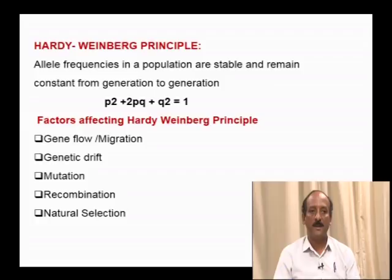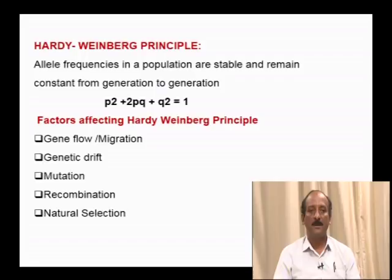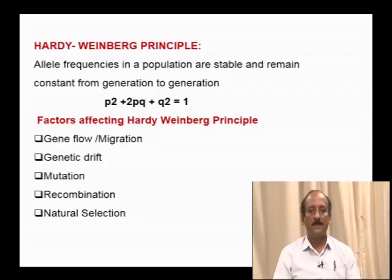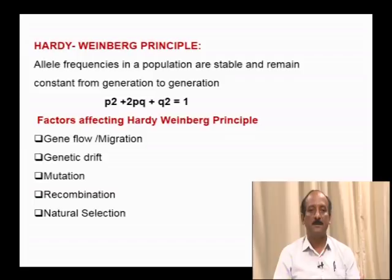According to the Hardy-Weinberg principle, the factors affecting allele frequency are gene flow or gene migration, genetic drift, mutation, recombination, and natural selection. When a set of population migrates to new areas, they contribute their gene frequency to the other population, leading to a change in allelic frequency. The change in gene frequency by chance is called genetic drift. Mutation is the sudden change in a DNA molecule, and recombination is due to the combining of genes during meiosis.